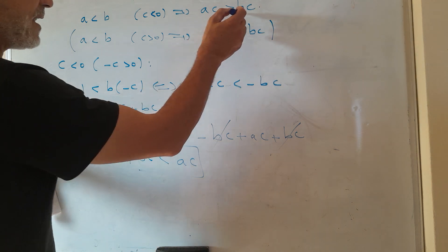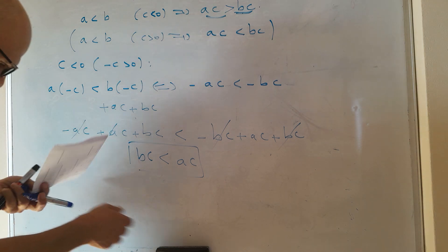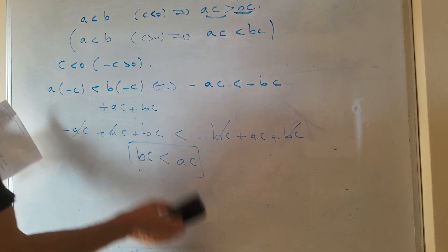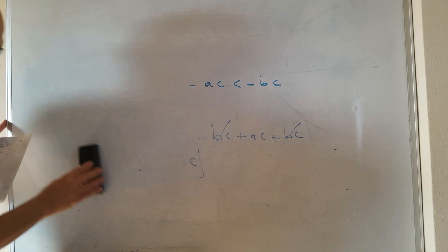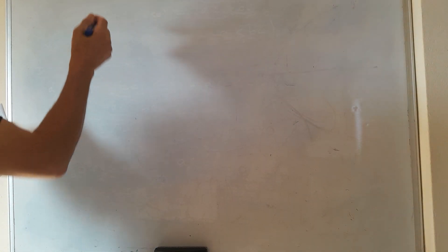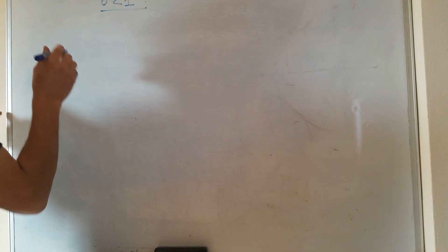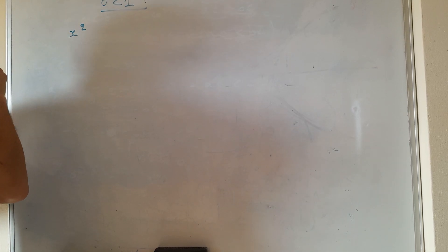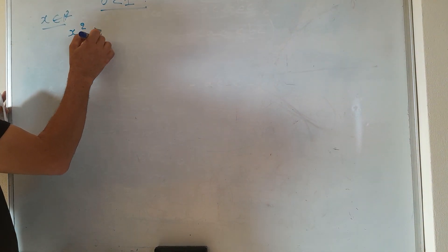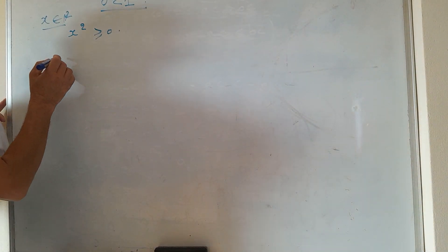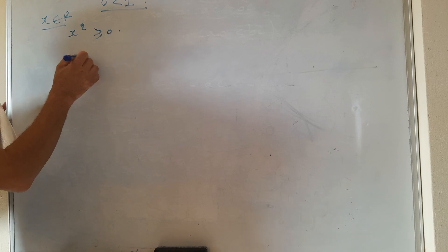The second result is: zero is strictly less than one. To prove this, we first prove that the square of any real number x satisfies x² ≥ 0. We distinguish two cases: x ≥ 0 and x ≤ 0.